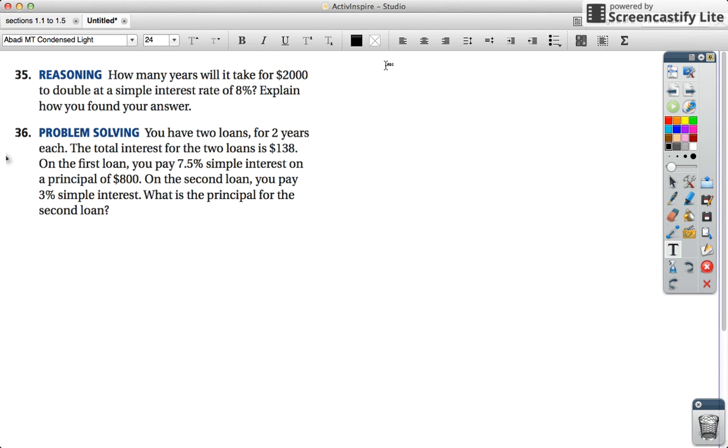Let's take 35. How many years will it take for $2,000 to double at a simple interest rate of 8%? Explain how you found your answer. Well, I'll explain it as I go. We have our formula. Notice I'm writing my formula down and our interest.